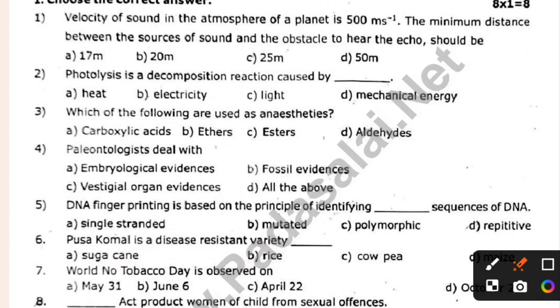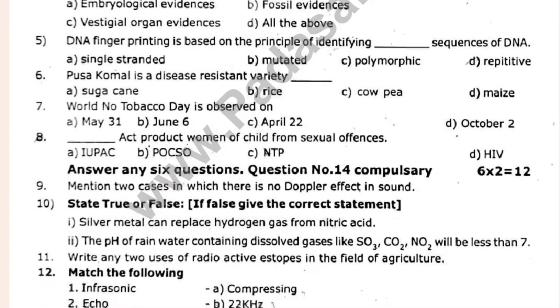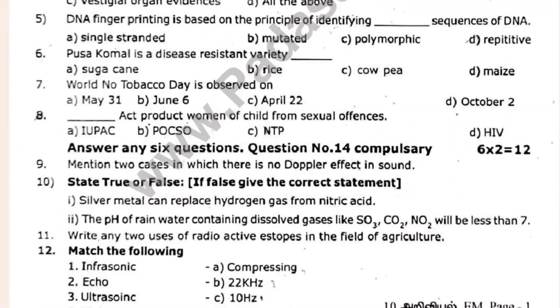Question 6: Pusa Komonisa disease-resistant varieties is dash. Question 7: World No Tobacco Day is observed on dash. Question 8: DASH act protects women and children from sexual offenses.